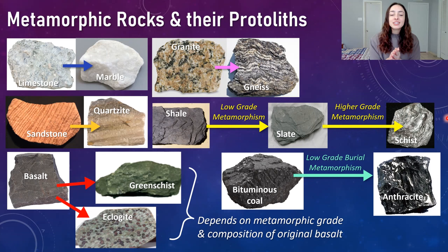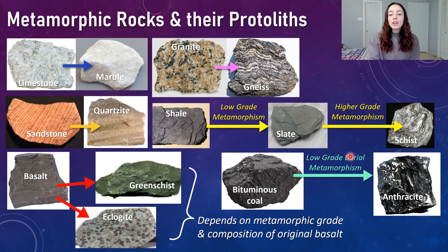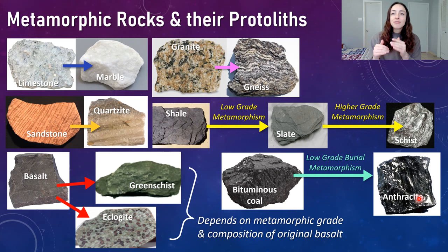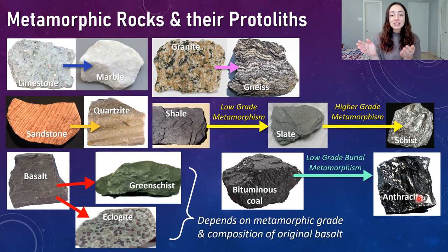Coal sits on that fuzzy line between diagenesis and metamorphism because it forms by burial metamorphism at low grade — relatively low temperature and pressure. Bituminous coal, which is technically still sedimentary, can metamorphose by low-grade burial metamorphism into anthracite coal. Anthracite can sometimes technically be classified as metamorphic, just past that fuzzy line. When determining its protolith, anthracite is straightforward — obviously its protolith is coal.